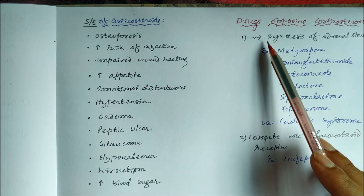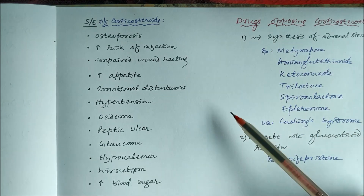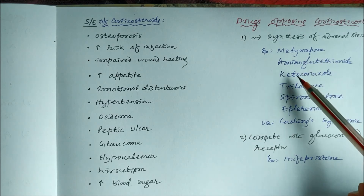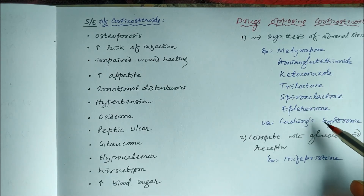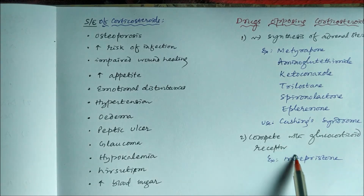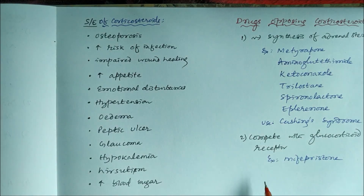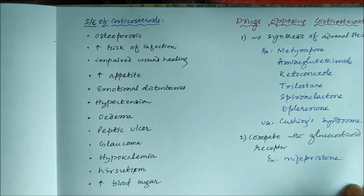Two types of drugs oppose corticosteroid actions. First, drugs that inhibit the synthesis of adrenal steroids: metyrapone, aminoglutethimide, ketoconazole, trilostane, spironolactone, and eplerenone — all used in Cushing's syndrome. Second, drugs that compete with the glucocorticoid receptor: mifepristone.